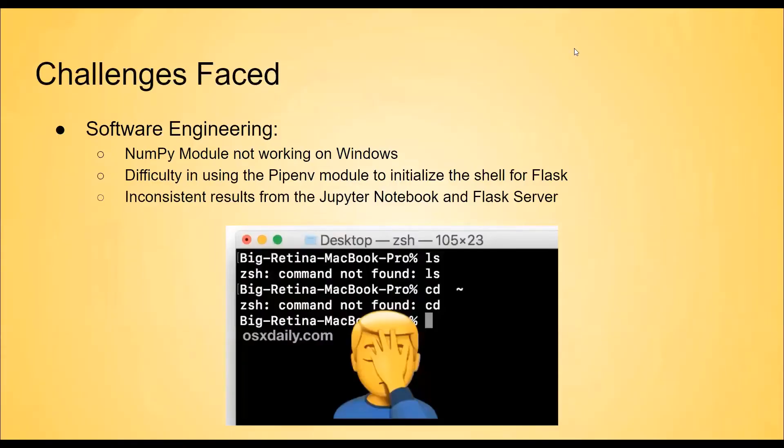The software engineering team ran into a few challenges while creating the web application for our project. We had some trouble integrating the machine learning models into our backend. Some of us had never used the Flask micro framework before, and so there was a slight learning curve. When attempting to initialize the shell for Flask, the pip ENV and virtual ENV modules needed to be reinstalled a few times before it ran properly. And for those of us who worked on Windows, while attempting to compile and run the backend on Visual Studio Code, there was an error with the installed NumPy module, despite it being up to date. Finally, when we compared the calculated credit scores from Flask with that of the models on Jupyter Notebook, the results differed slightly, although we feel that is due to differences in the two environments.